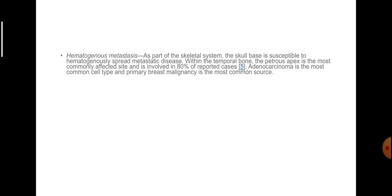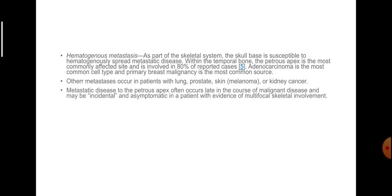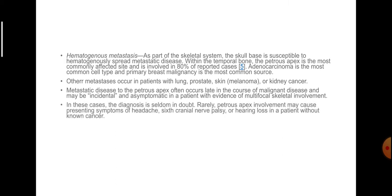Hematogenous metastasis: As part of the skeletal system, the skull base is susceptible to hematogenous metastatic disease. Within the temporal bone, the petrous apex is the most commonly affected site, involved in 80% of reported cases. Adenocarcinoma is the most common cell type and primary breast malignancy is the most common source; other primary sites include lung, prostate, skin and kidney. Metastatic disease often occurs late in malignant disease and may be incidental. Rarely, petrous apex involvement causes headache, 6th cranial nerve palsy or hearing loss in a patient without known cancer.